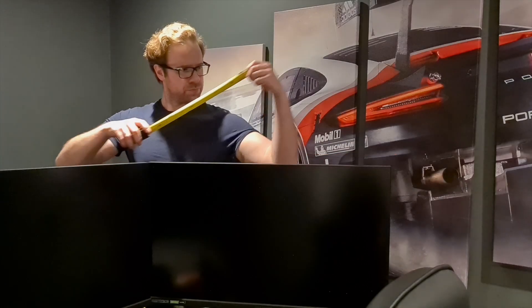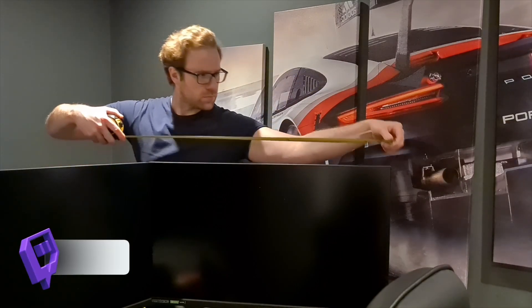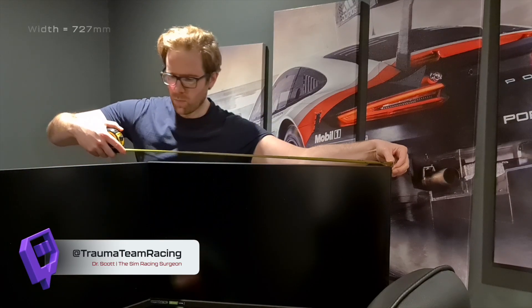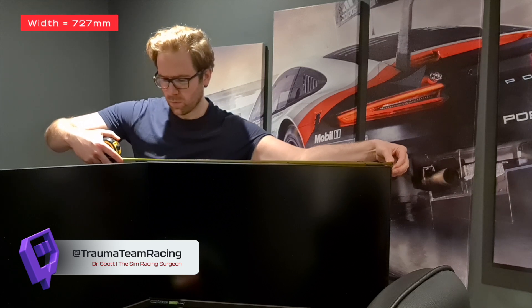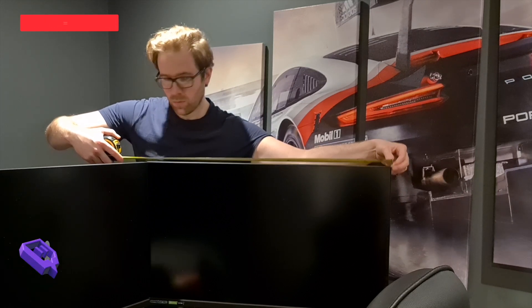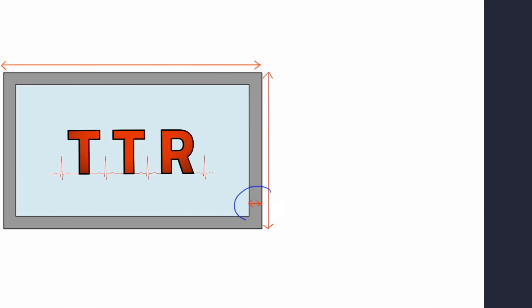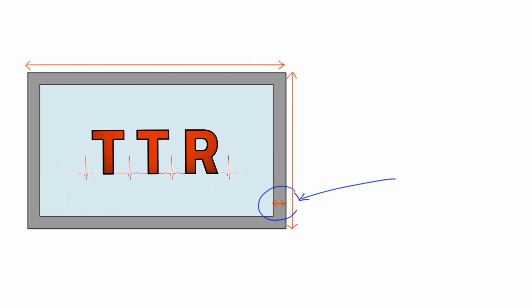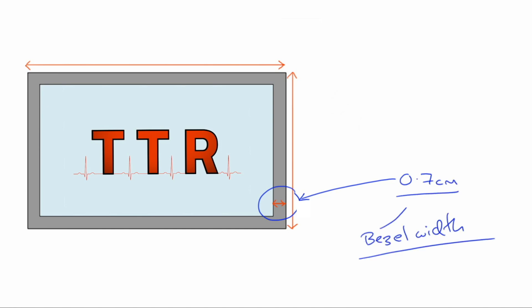How to measure your monitors. Measuring up is relatively easy and we need to take two further measurements. Firstly we need to measure the monitor's total width. Then you want to measure your bezel's width — this is the distance from the outermost portion of the monitor to the start of the image on your monitor. Here mine measured 0.7 centimeters.